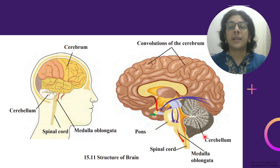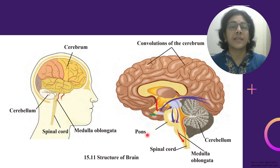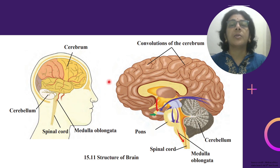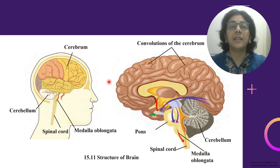This is the cerebral, this is the medulla oblongata, spinal cord and pons. And here there are convolutions of the cerebral. The images, charts used in this video are taken from the Maharashtra State Board Standard 9 textbook.